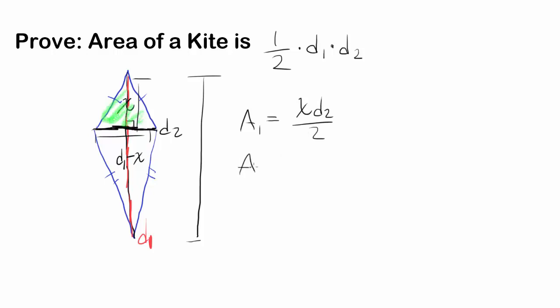How about the area of the second triangle? So we want to find area of this triangle. Let me shade it. Oh man, that's too strong. Let's use this one. For this one, our area is going to be, in this case, D1 minus X, which is the height, times D2 divided by 2.